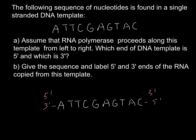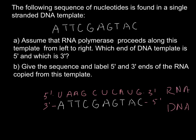A pairs with thymine in DNA, but in RNA this is going to be uracil. So uracil here and adenine here. Thymine pairs with A — adenine here, guanine here, cytosine here, uracil here, cytosine, adenine, uracil, and guanine. This is the DNA strand and this is the RNA strand. The main difference is that in DNA adenine pairs with thymine, and in RNA adenine pairs with uracil.